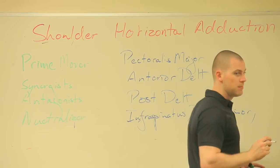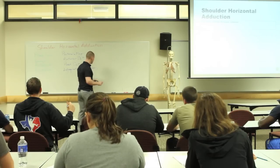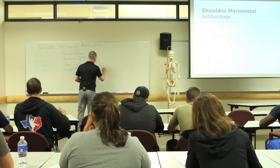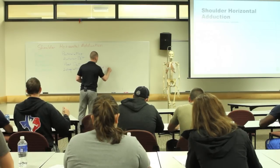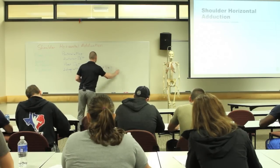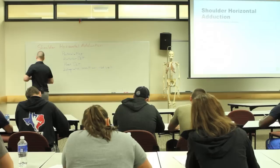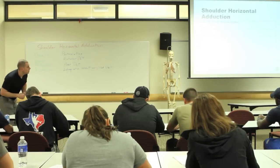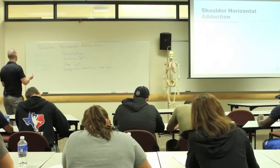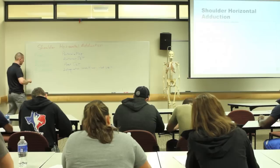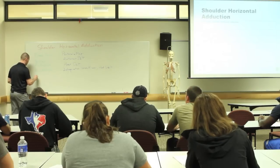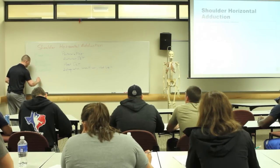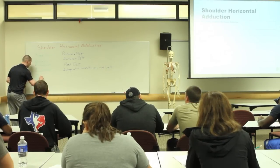Muscles can be in two different categories — posterior delt is one more. Stabilizers: what are the stabilizers for the shoulder? It would be rotator cuff.